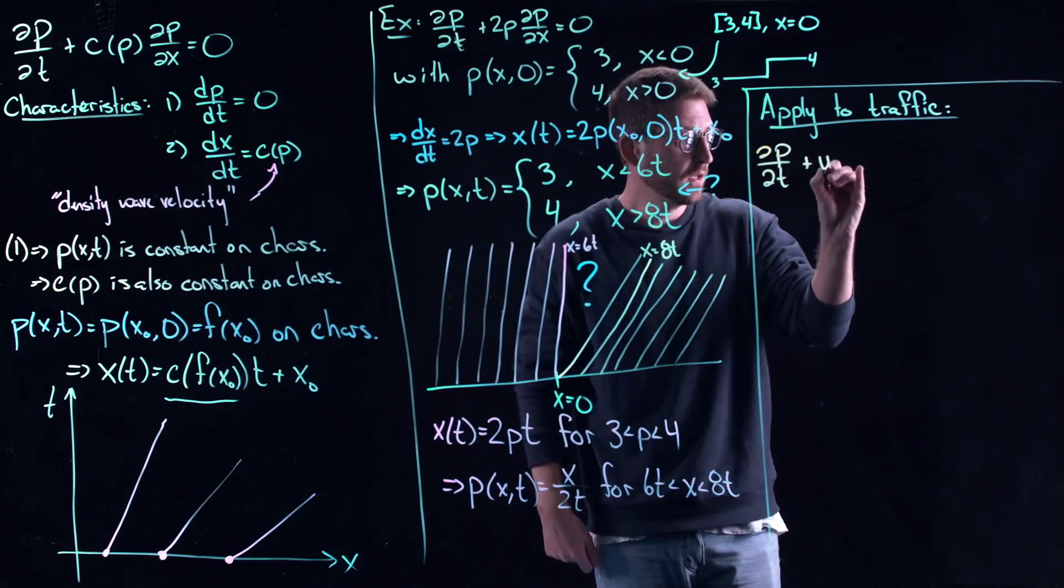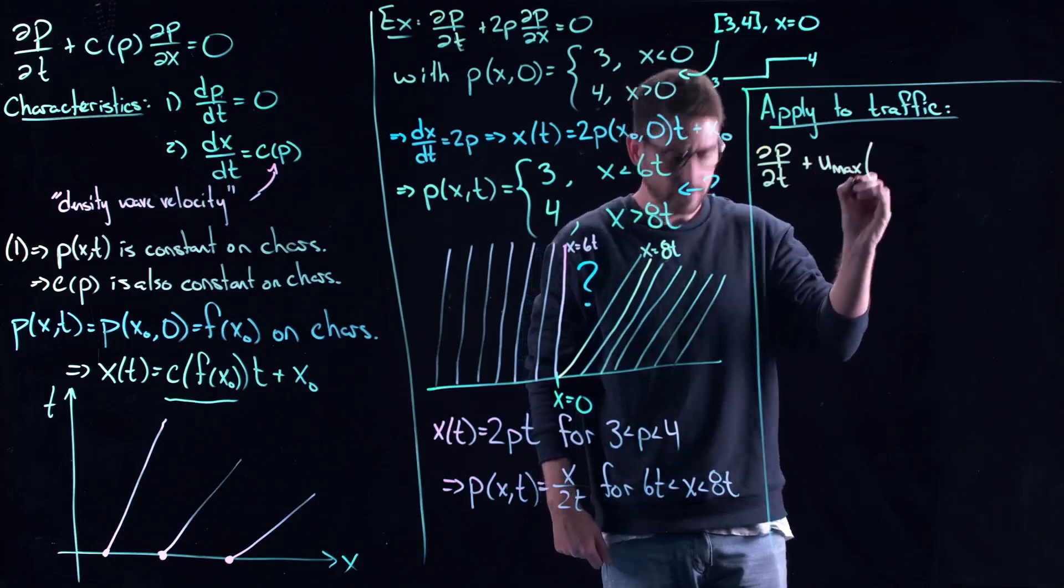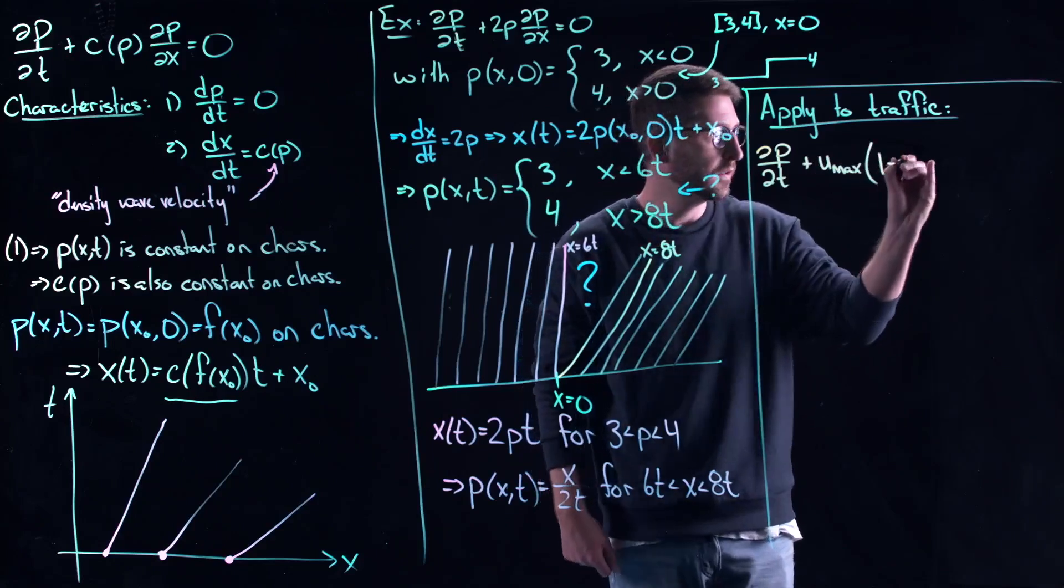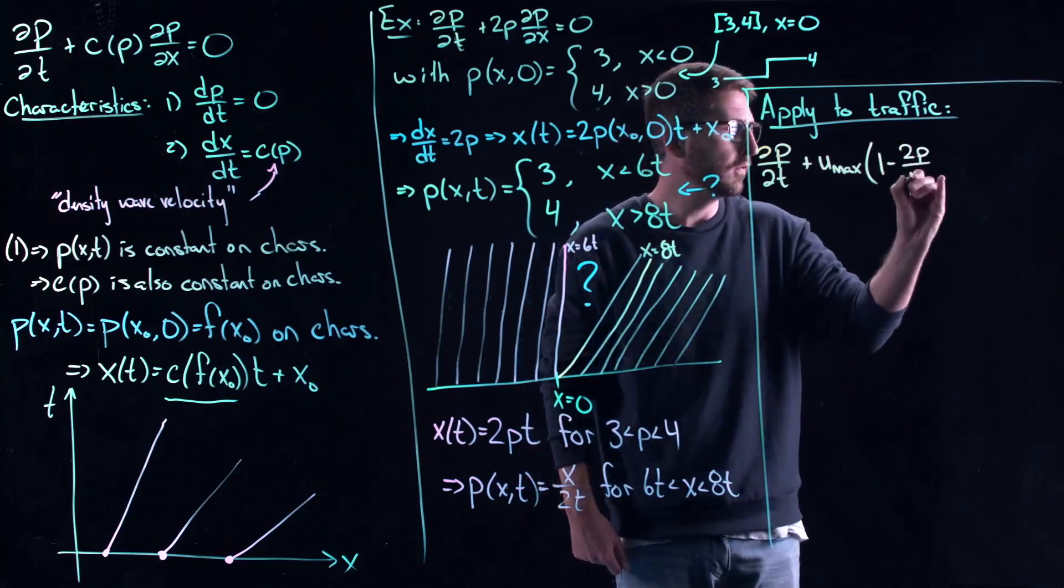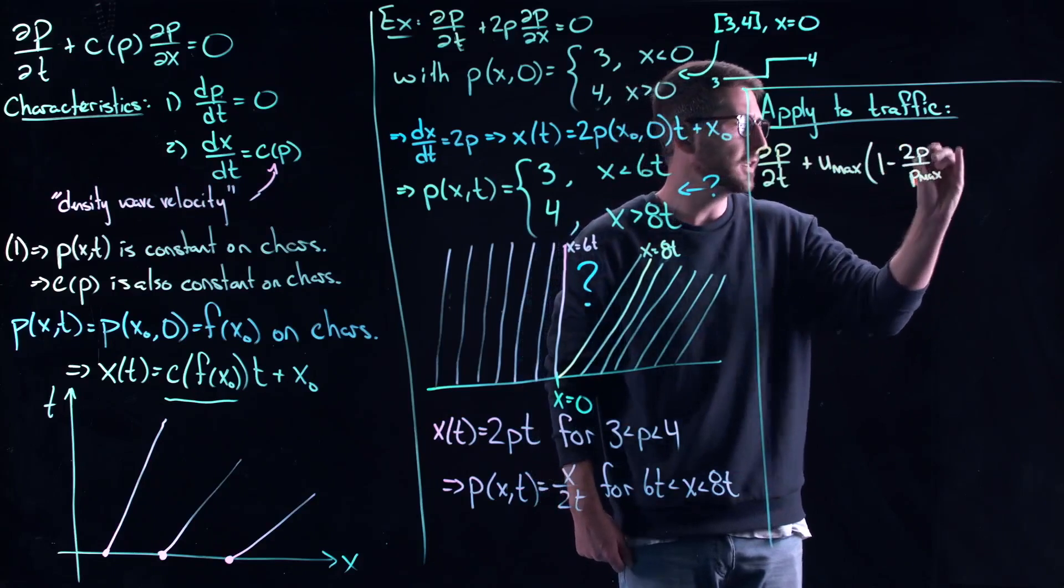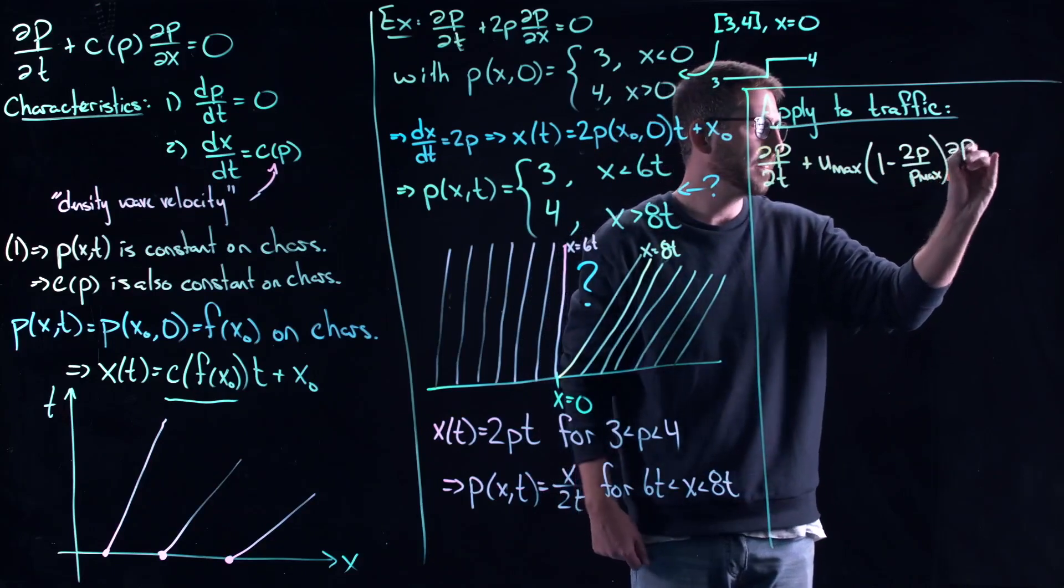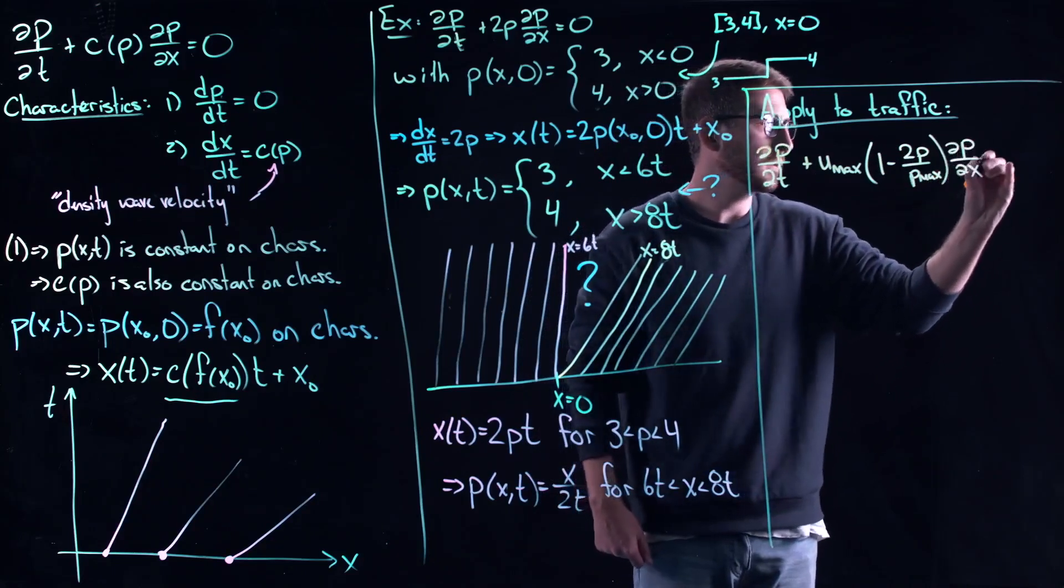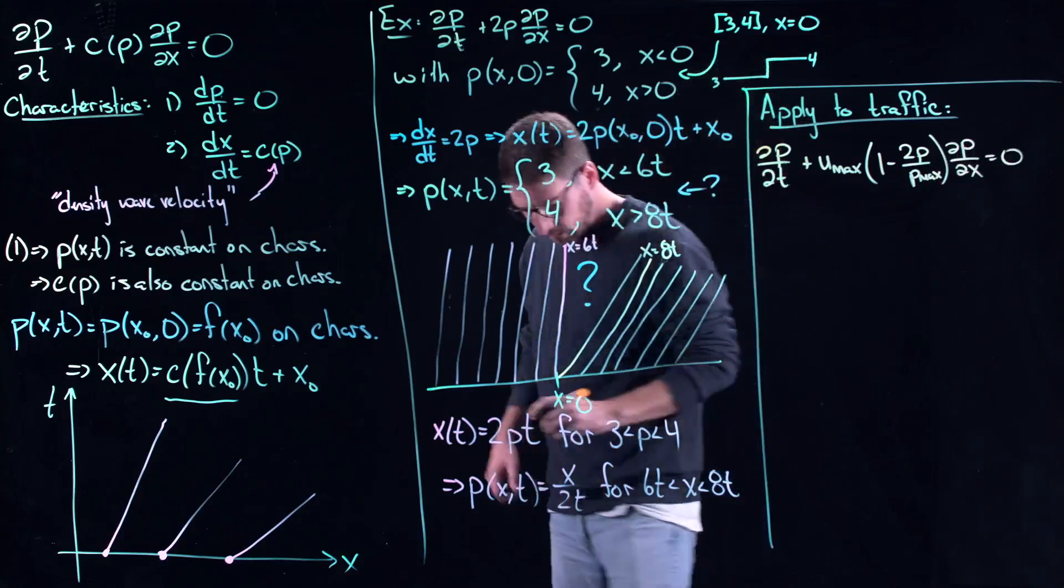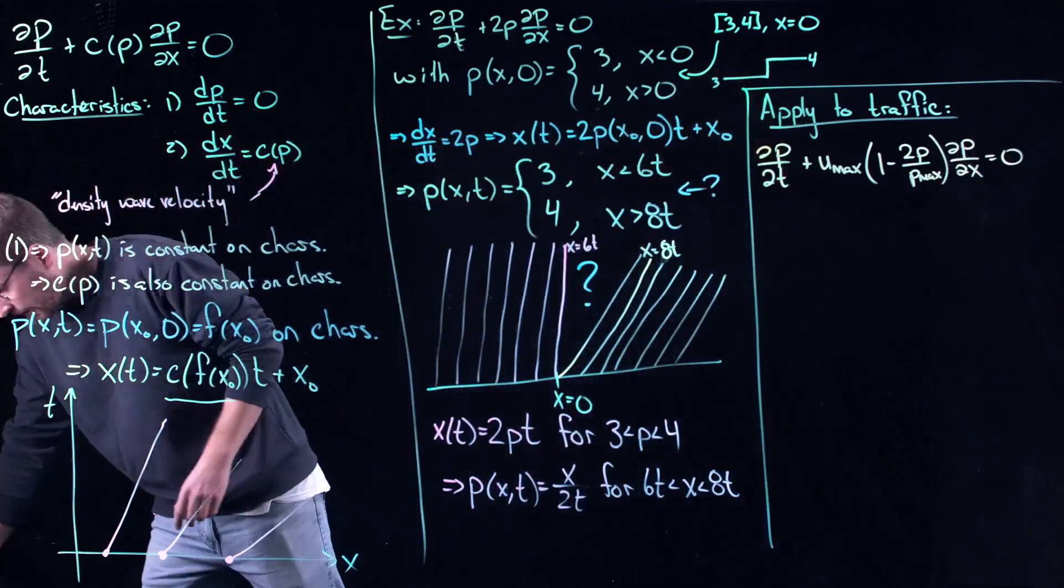If you remember from the very end of the previous video, I derived a c function that looks like this: ρₘₐₓ(1 - 2ρ/ρₘₐₓ). And here's what I want to think of.